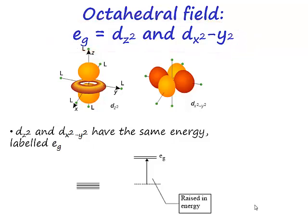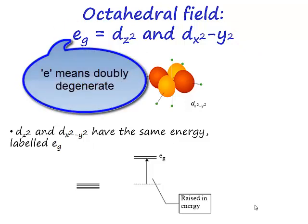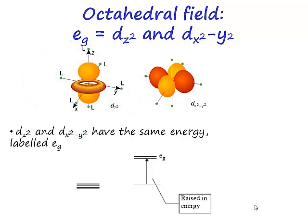Now what does this eg bit mean? Well, it's a label that we use. The e, believe it or not, stands for doubly degenerate. So you have two orbitals of the same energy. These orbitals are doubly degenerate and that, for reasons I don't understand, is given the letter e. We'll see in a minute how silly this is when we get to triply degenerate.